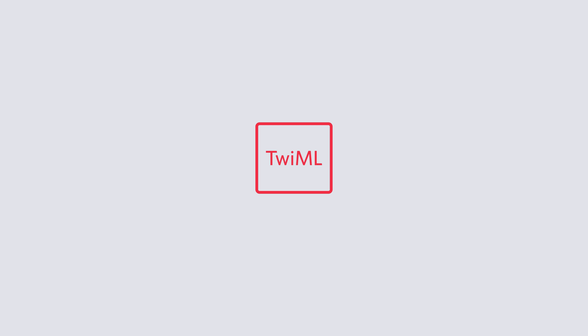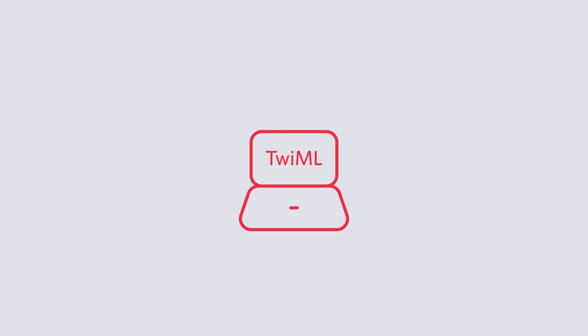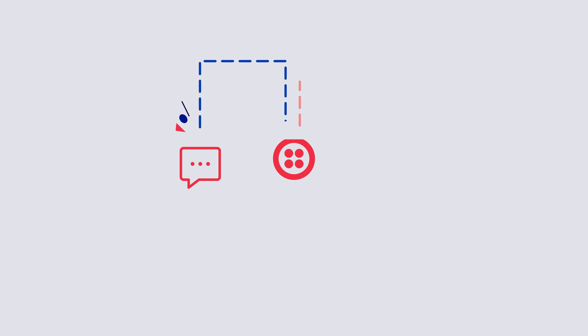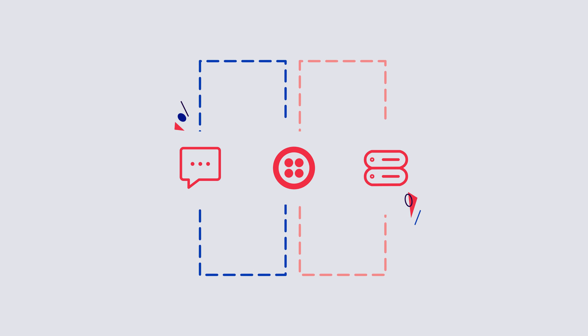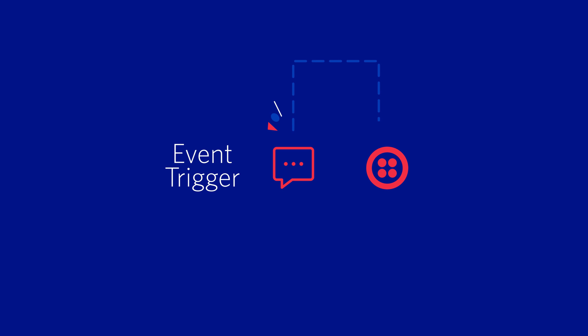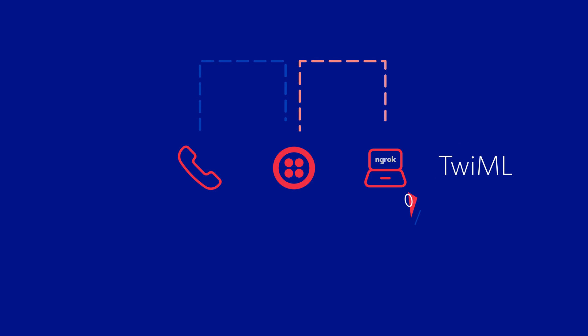TwiML bins are really cool and easy to use, but what if we want to have more control over those instructions? We can actually serve TwiML from anywhere that is accessible via a URL on the internet. What we're going to do in this video is use webhooks to deliver TwiML instructions for Twilio to execute. A webhook is a user-defined HTTP callback. Essentially, whenever a certain event is triggered, an HTTP request is made to a URL that you specify. In our case, if your Twilio number receives a phone call, Twilio will make an HTTP request to your web server. When your web server responds with TwiML, Twilio will take that TwiML and follow those instructions on how to handle the phone call.